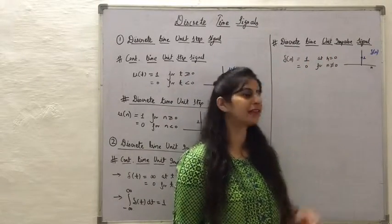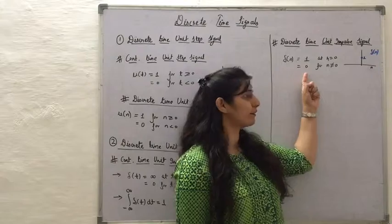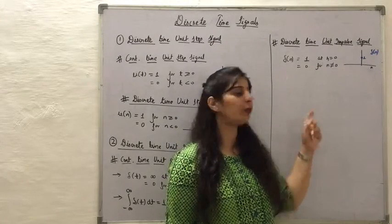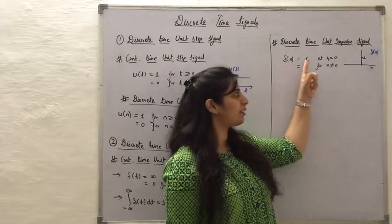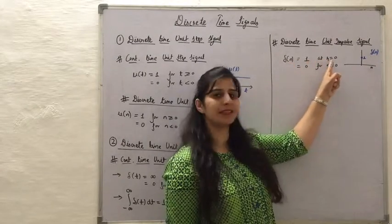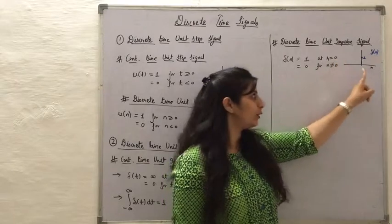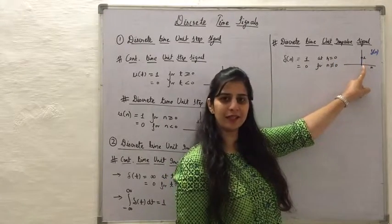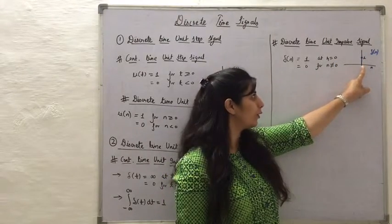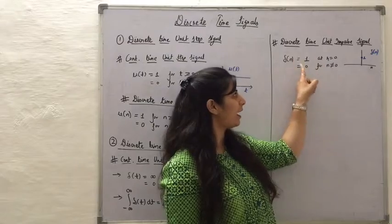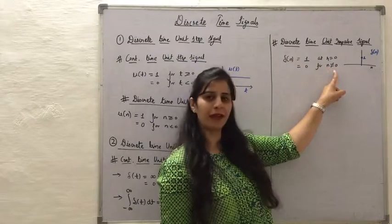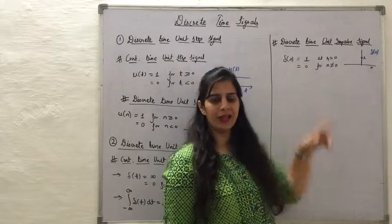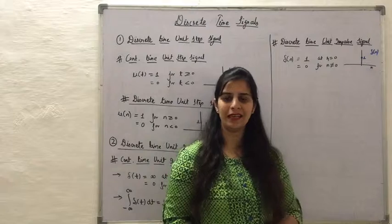The discrete time unit impulse signal is denoted δ(n). It has a value of 1 at n equals 0, and a value of 0 for all other values of n.